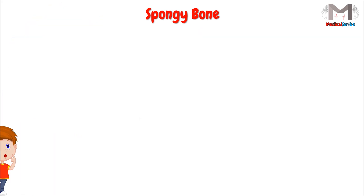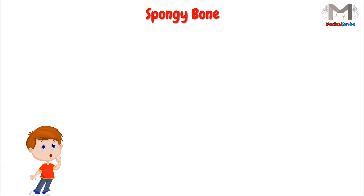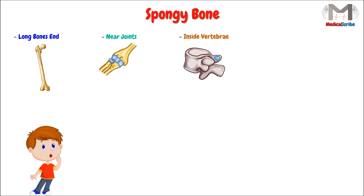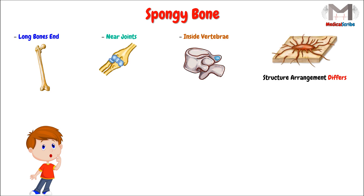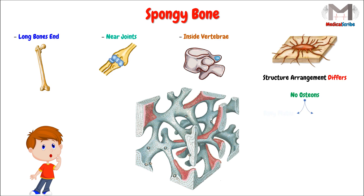Where is this type found? This type will be found mainly in the end of long bones, near joints, and inside the vertebrae. Although the spongy bone structurally consists of osteocytes inside lacunae, as in the compact bone, the structural arrangement here differs from the first type in that there are no osteons here. What is present is an interconnecting bony plates and rods which are called the trabeculae, and the osteocytes will be within these trabeculae.